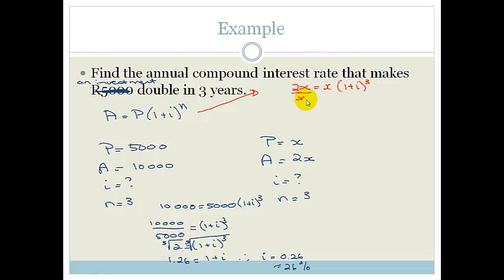We divide both sides by x to get rid of that x on the right hand side. That cancels, and we've got 2 equals 1 plus i to the 3. Do you see at this point we're at exactly the same point as that?